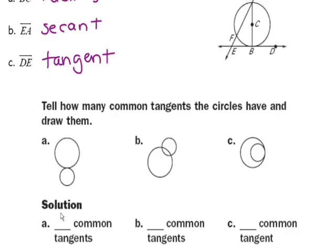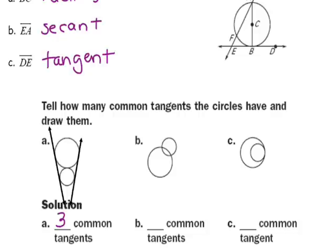A actually has three common tangents. There is one down each side — they intersect at two points — and then a second one on the other side. Since these two circles intersect at a single point, there's a third tangent that also goes through that single point. That's where the three common tangents come from.